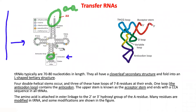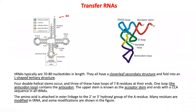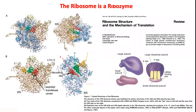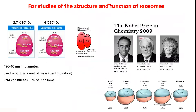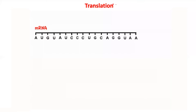The tRNA can also be depicted as an inverse L-shaped schematic, with the amino acid at one end and the anticodon loop at the other. Now let's go over the whole translation process again. Translation is the second stage of protein synthesis, where a piece of mRNA is used to create a polypeptide chain.